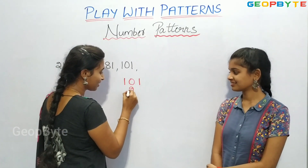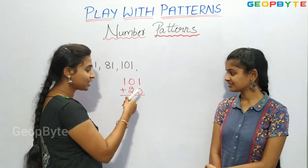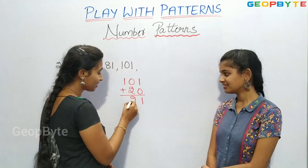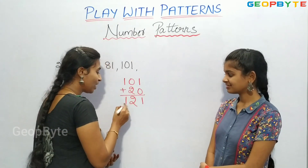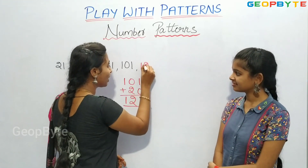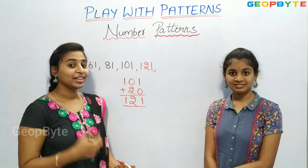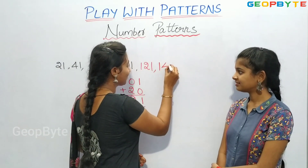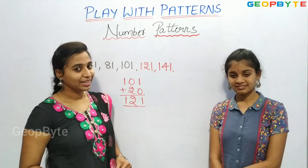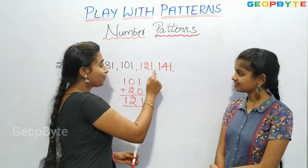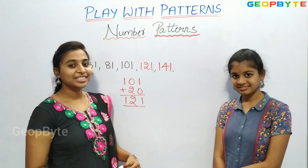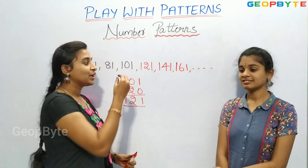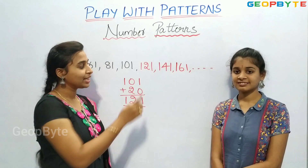Let us write: 101 plus 20. 1 plus 0 is 1, 0 plus 2 is 2, so we get 121. Similarly, if we add 20 to 121 we get 141. And if we add 20 to 141 we get 161. Children, this pattern goes on continuing by adding 20 to every number.